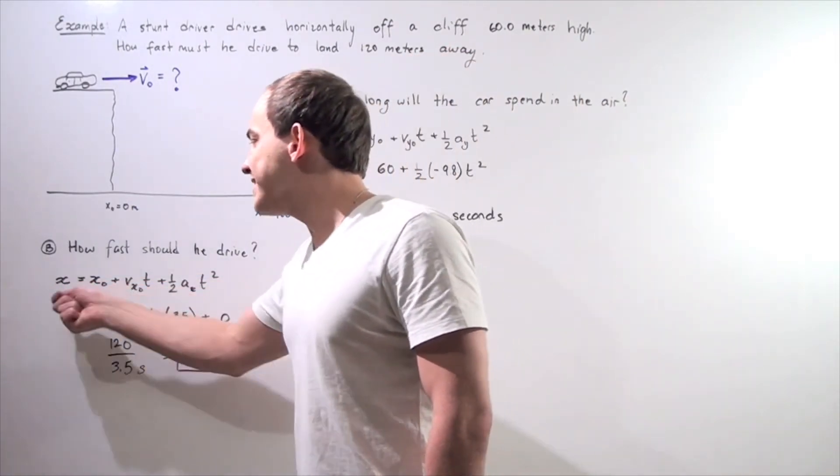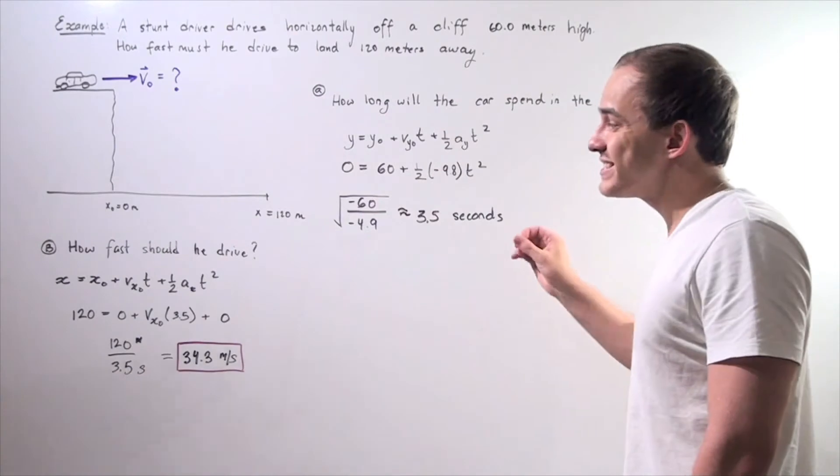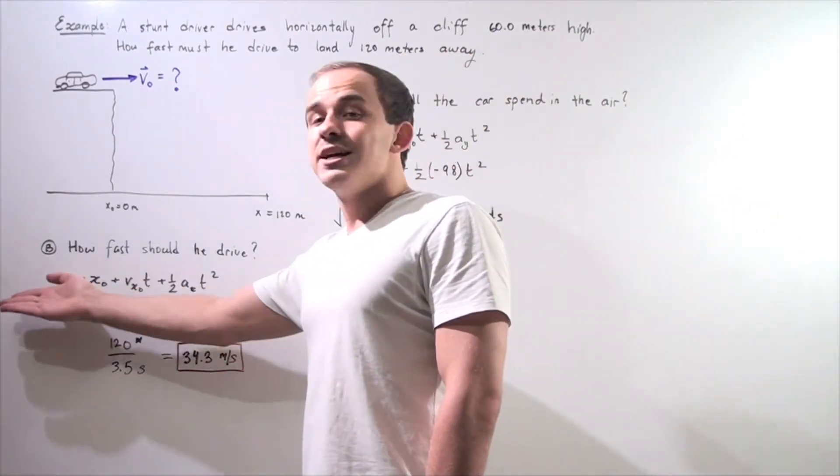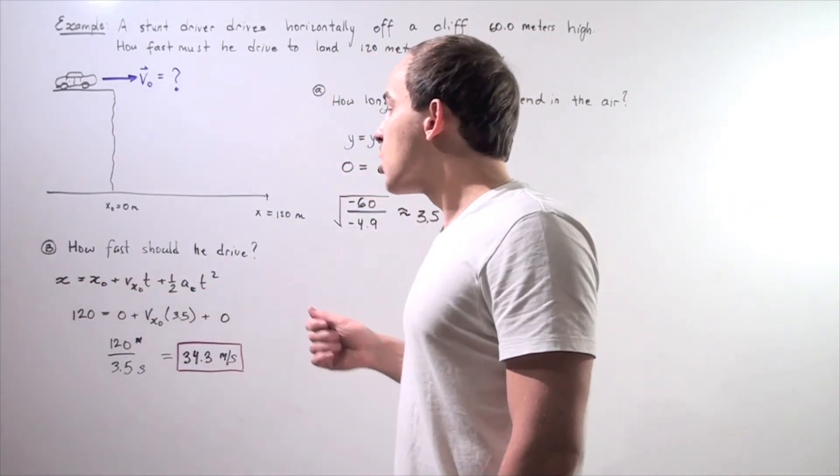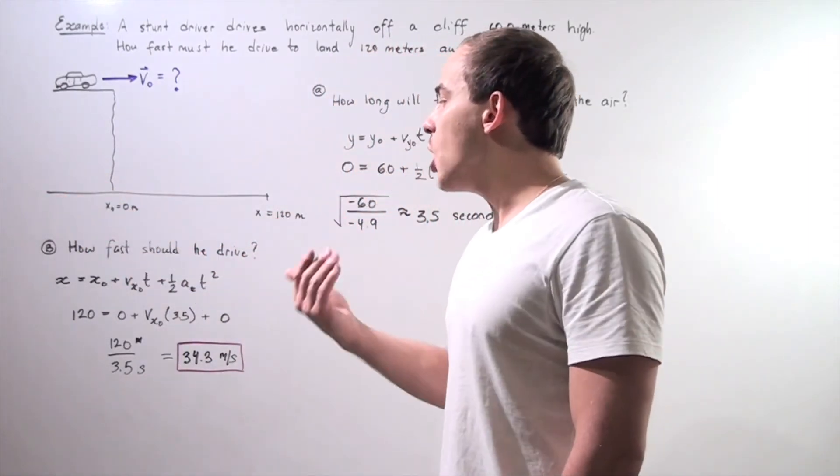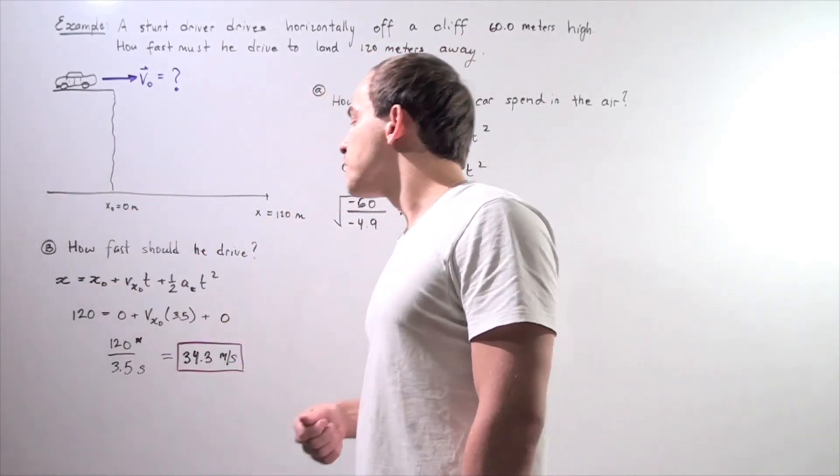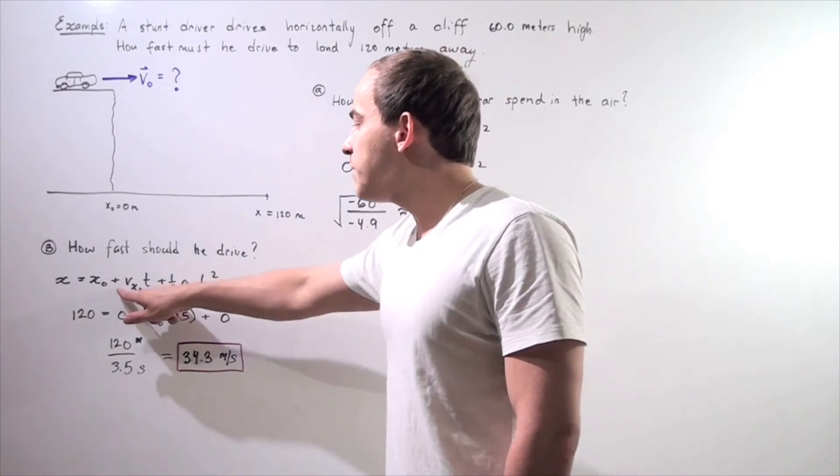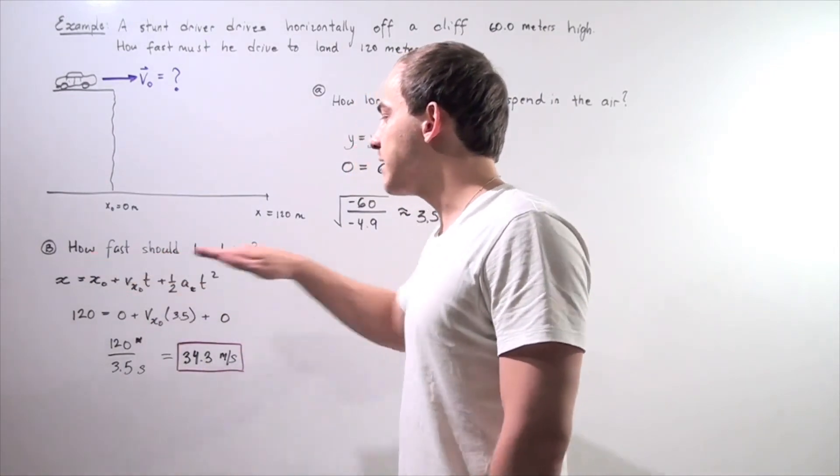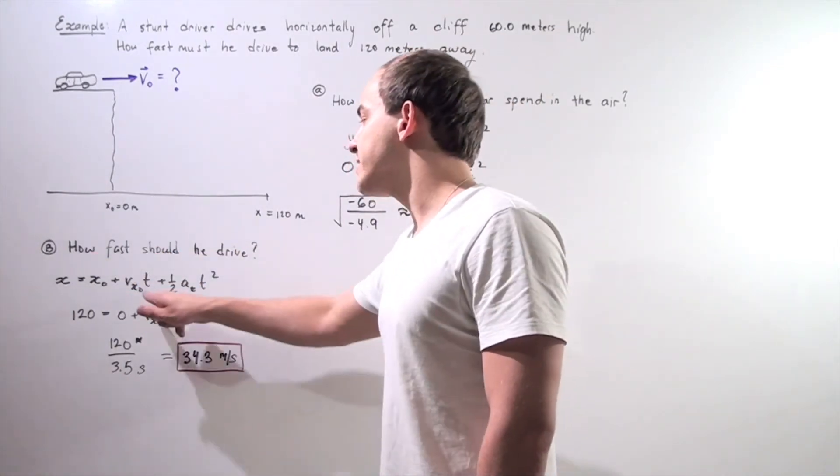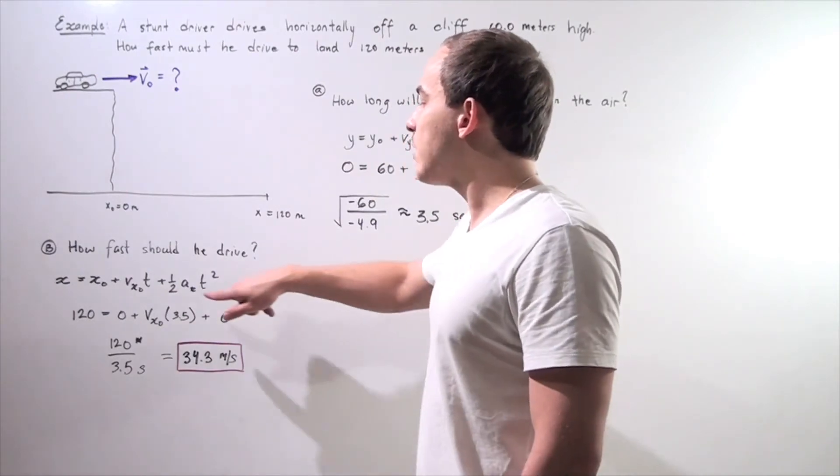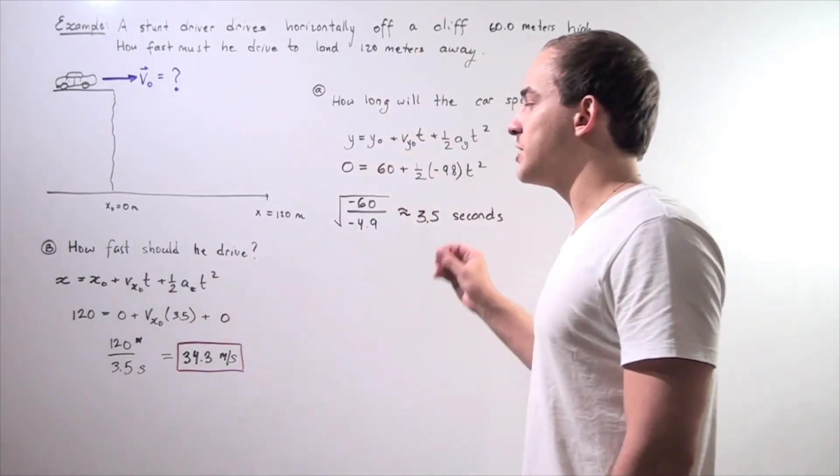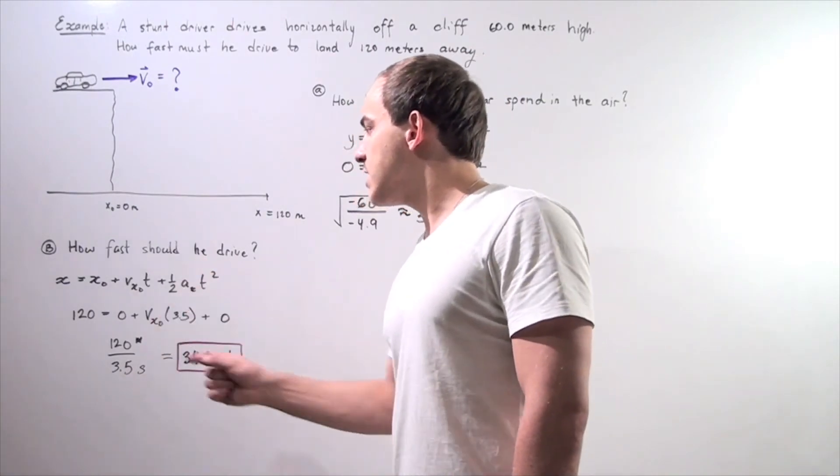So let's use the following equation. So this equation is identical to this equation except it deals with the x direction. So we know our x final is 120. We know our x initial is 0. We want to find what this initial velocity is along the x direction. We know what the time is, and we know that our ax, our acceleration in the x direction is 0. So this is 0.